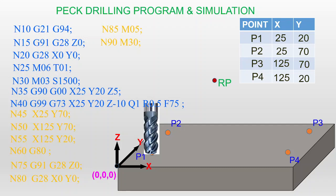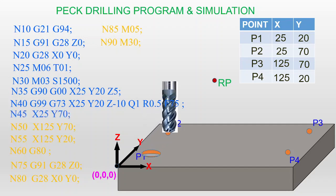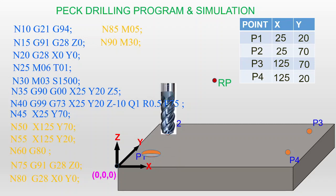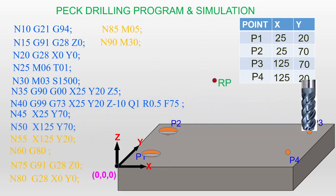Then move the tool from point 1 to point 2 by giving coordinates N45, X25, Y70. The cycle takes care of drilling at point 2 automatically. Next, move from point 2 to point 3 with X125, Y70, and the drilling at point 3 is performed and completed.